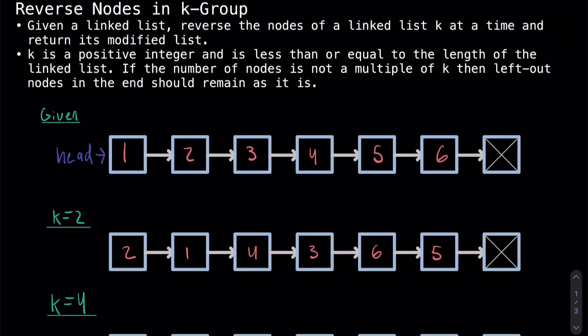Let's get into it. I've gone ahead and copied down everything that LeetCode gives you. We're given a linked list and we're told to reverse the nodes of the linked list K at a time and return the modified list. We're also told K is a positive integer and is less than or equal to the length of the linked list. If the number of nodes is not a multiple of K, then the left out nodes at the end should remain unchanged.